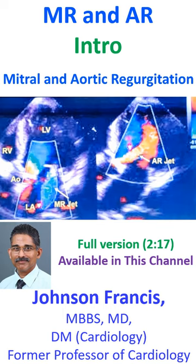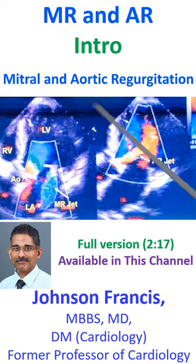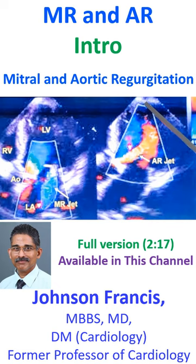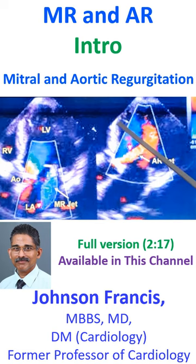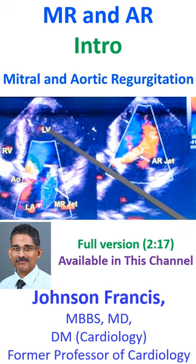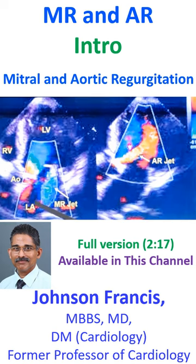This is a still image from a color Doppler echocardiogram obtained from the apical 5-chamber view. This is the region where the transducer is placed, and the image looks inverted because it is imaging from apex upwards. The structures visible are the left ventricle, right ventricle, left atrium, and part of the aorta — that is why it is called the 5-chamber view.